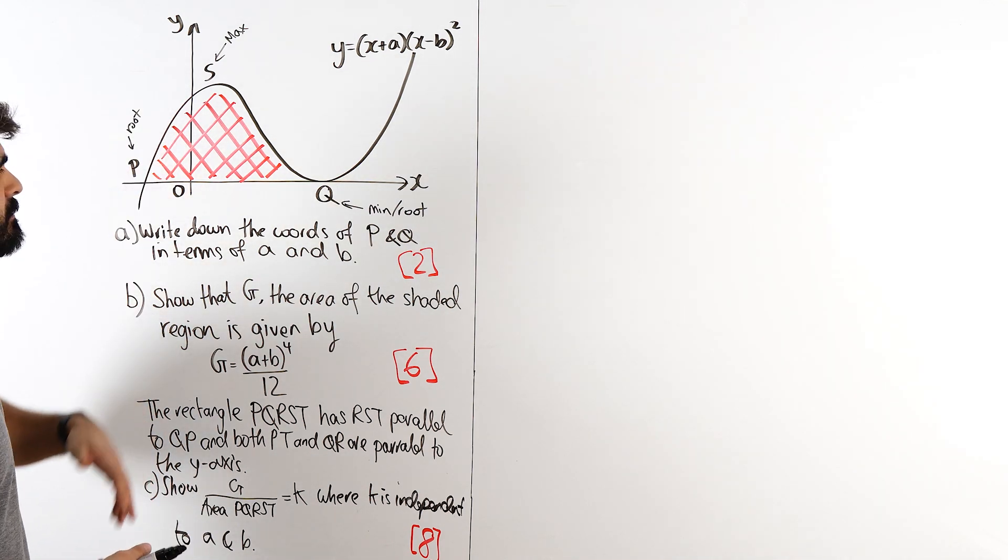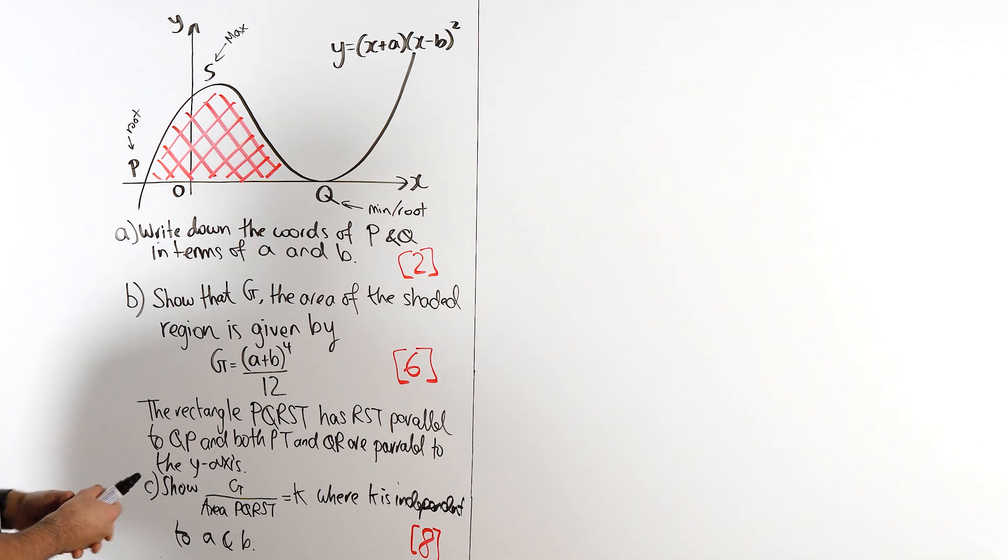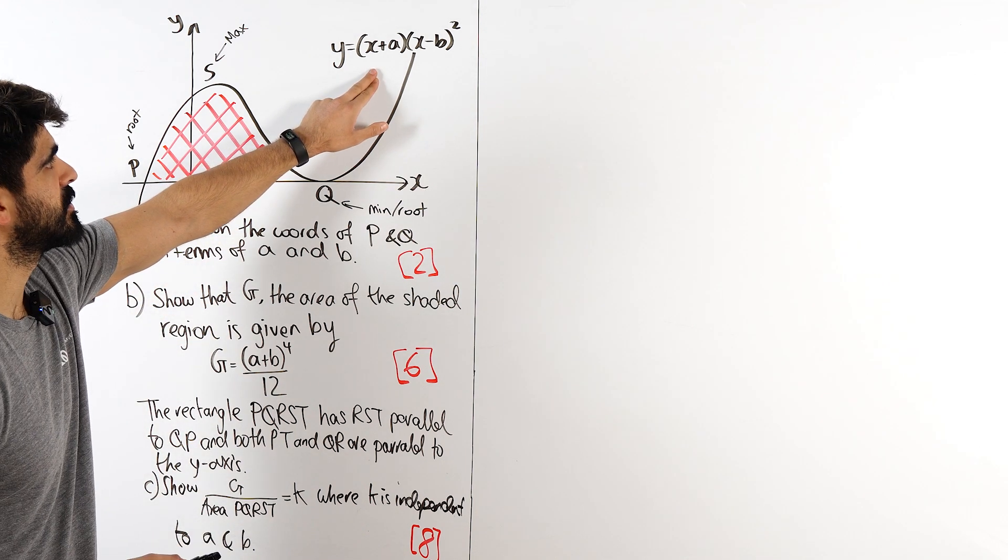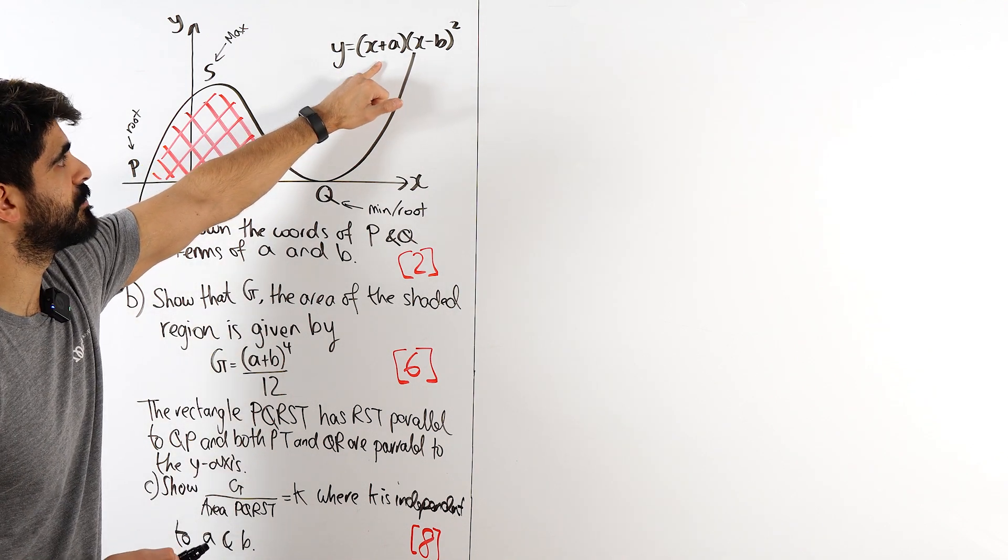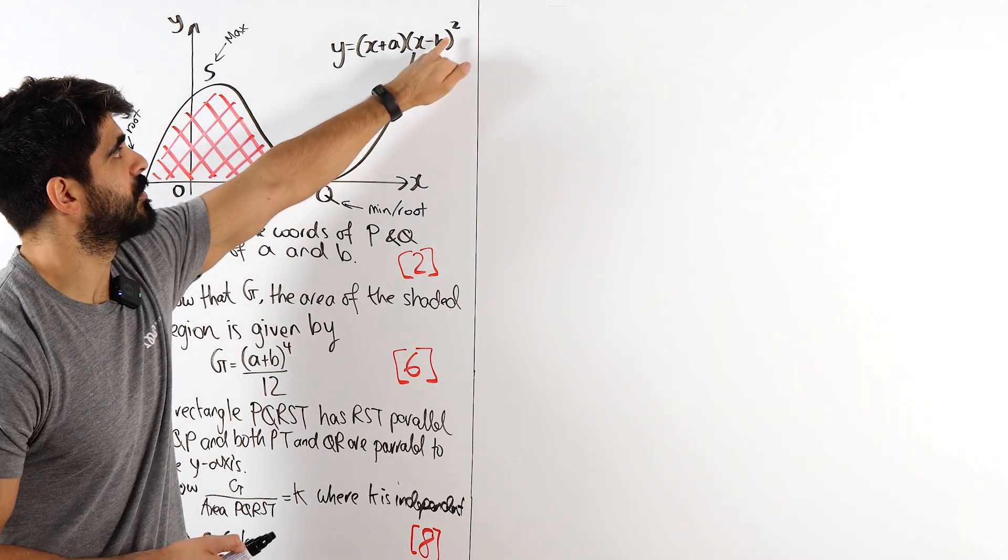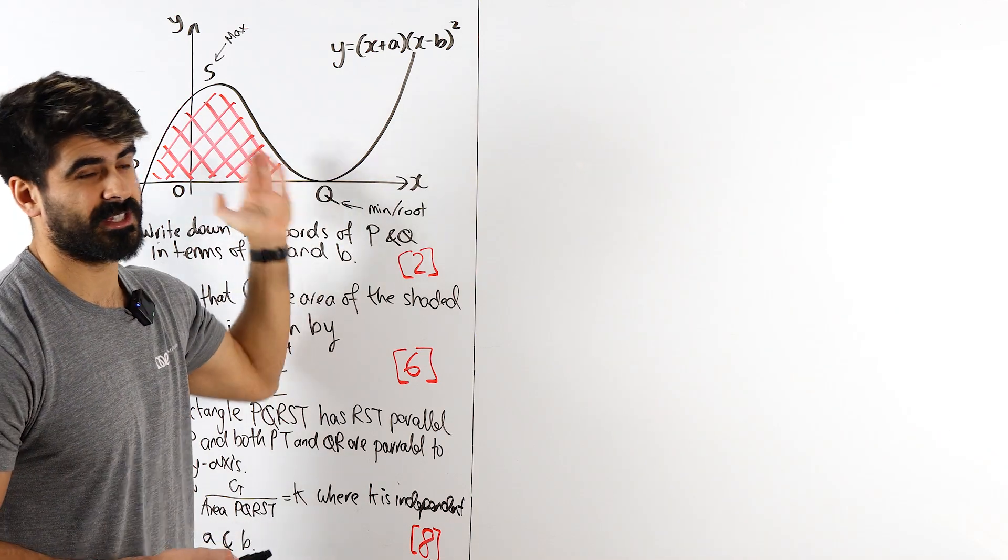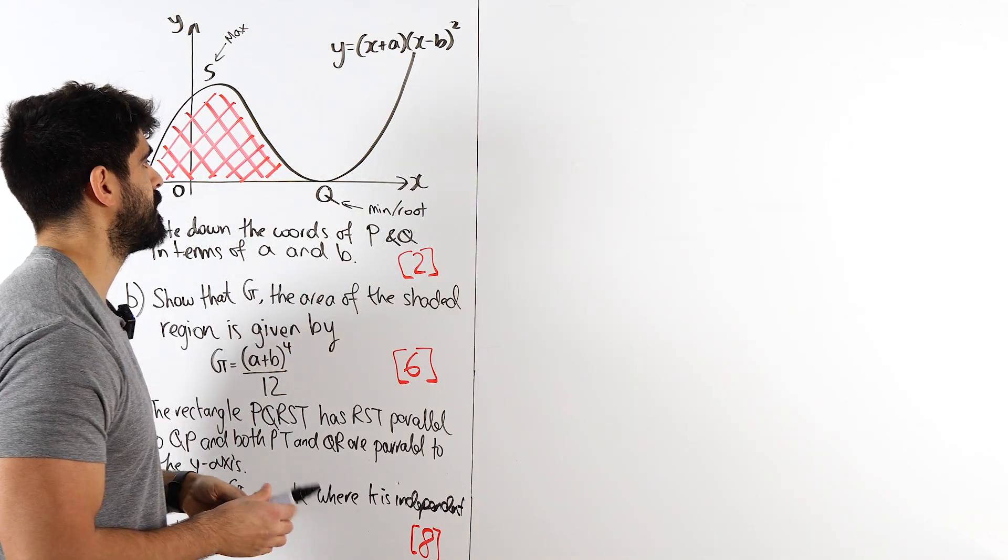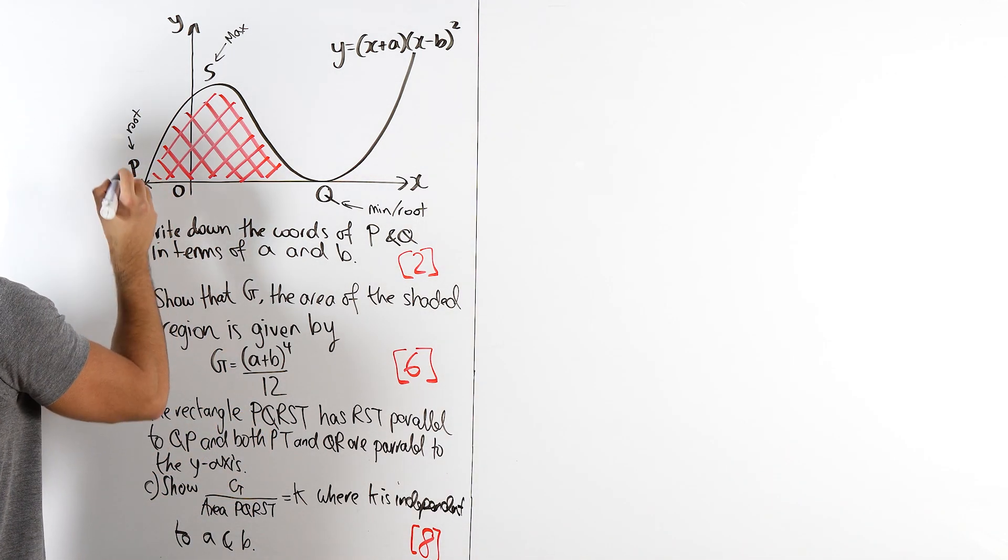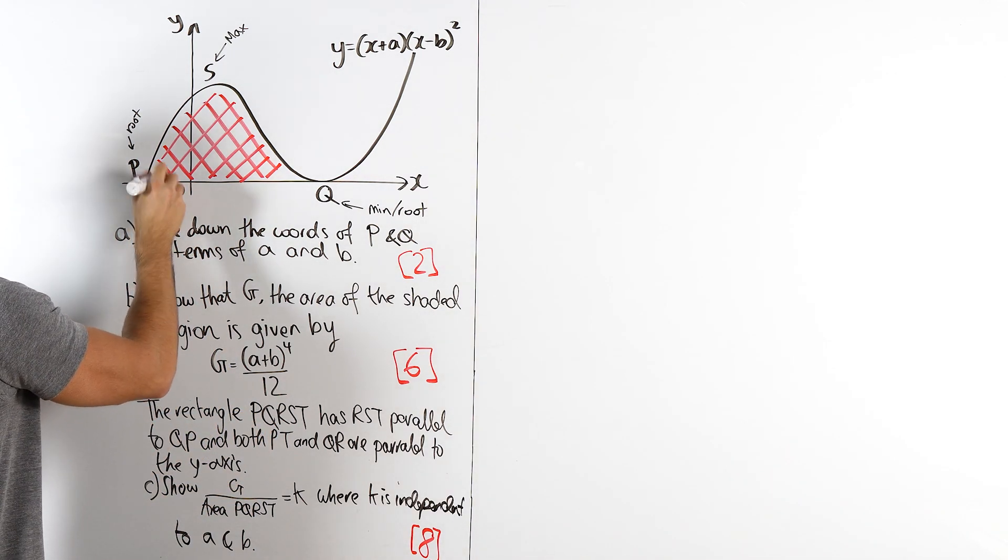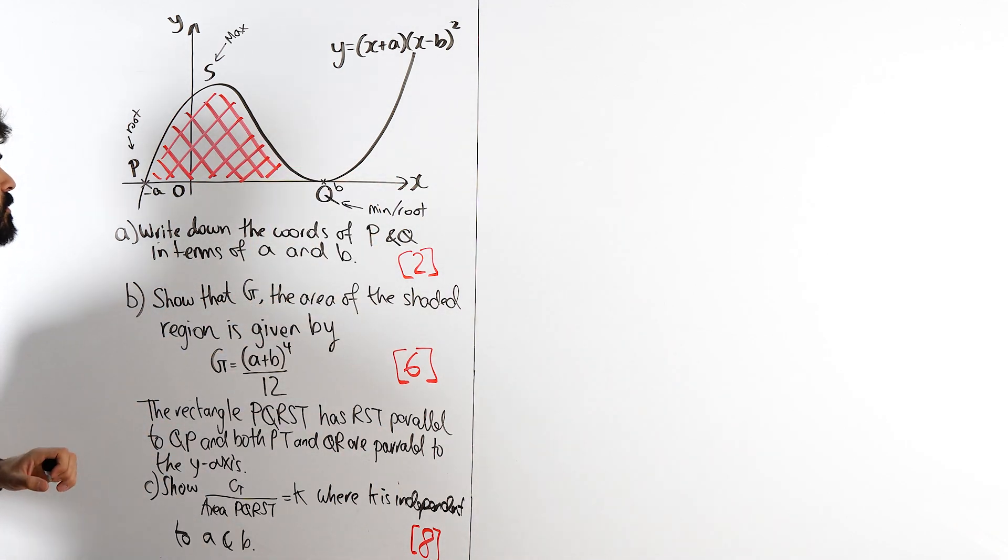So we got this diagram. It says write down the coordinates of P and Q in terms of a and b. The equation of the graph is this, that is a cubic. I can clearly see P being the root is when this bracket is zero, so minus a, and Q with the squared bracket means that is b. That is a really easy part of the question. At least we have bagged ourselves two marks.